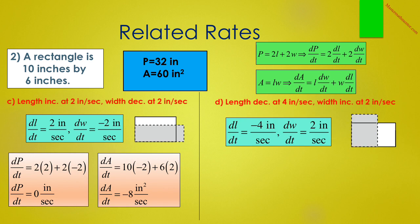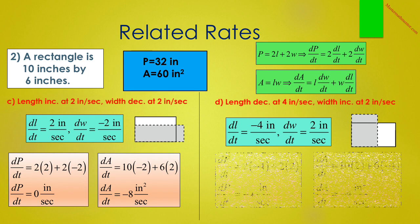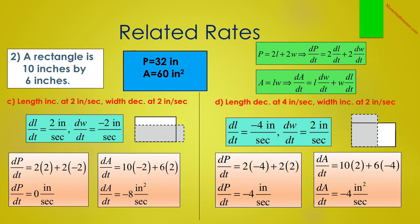In D, the length is decreasing at 4 inches per second while the width is increasing at 2 inches per second. So dL/dt equals negative 4 and dW/dt equals 2. Therefore dP/dt equals 2 times negative 4 plus 2 times 2, which is negative 4 inches per second. And dA/dt equals 10 times 2 plus 6 times negative 4, which is also negative 4 square inches per second.